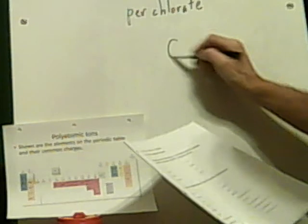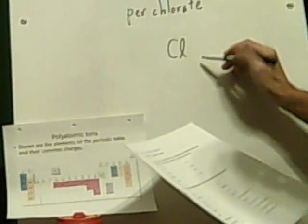Perchlorate. Something tells me this is going to be Cl because it's chlorine — it's a chlorate, so it might be an O4. I don't think the 'per' does anything — it's just like permanganate. I'm going to say maybe it's a minus 2, but I'm not 100% sure. The answer key says it is ClO4, but it turns out it's only a minus 1. So I got that wrong — hopefully I'll have a reference sheet for that.